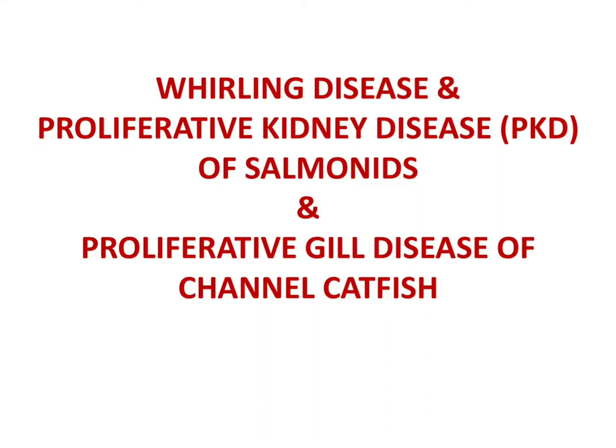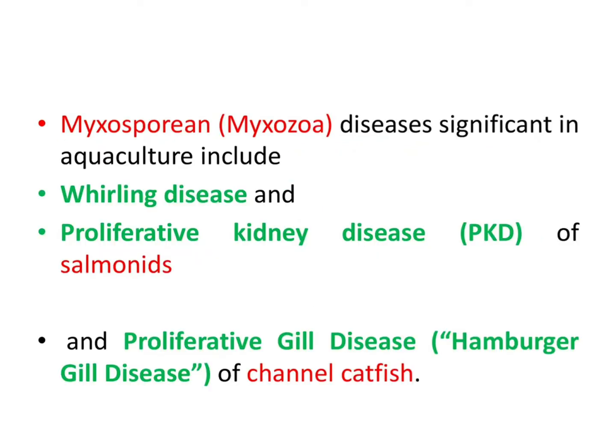Dear friends, welcome back to Curious. I am Dr. Mausina. In today's video we will discuss three different disease conditions in fishes. All these are myxosporine diseases: whirling disease, proliferative kidney disease (PKD) of salmonids, and proliferative gill disease or hamburger gill disease of channel catfish. All these are myxosporine diseases significant in aquaculture, so let's discuss them one by one.